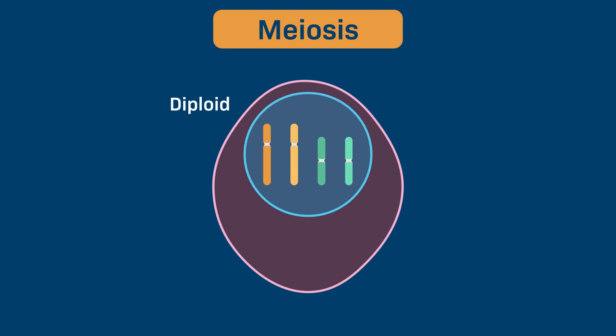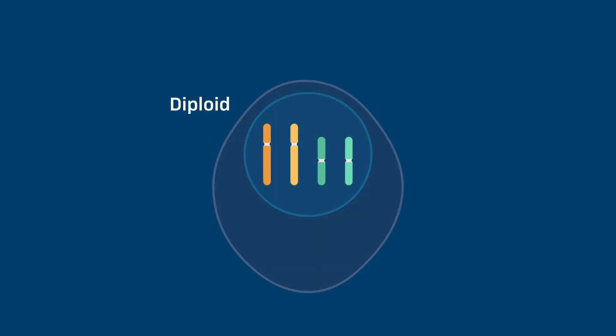In animals, meiosis only happens in special diploid cells called germ cells. A diploid cell, which is designated as 2N, has two copies of each chromosome.